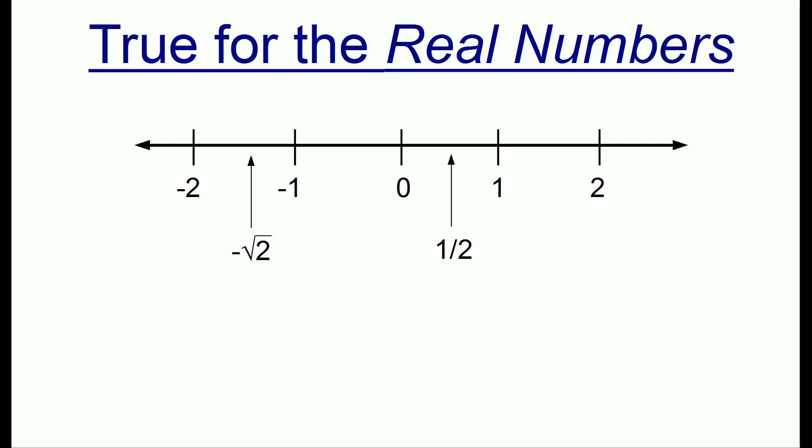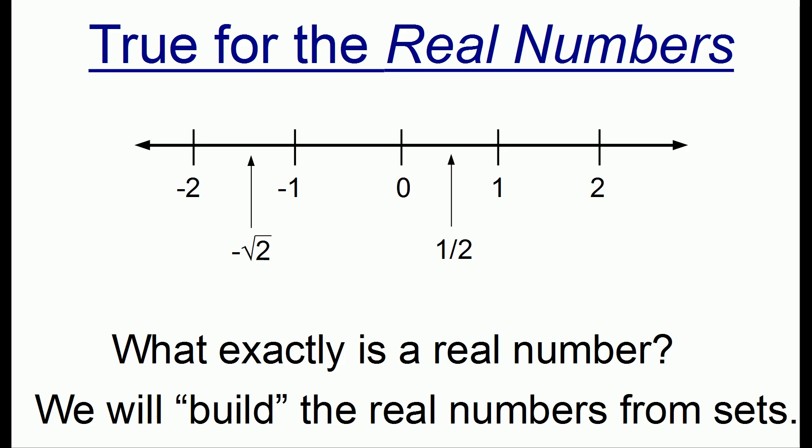But to explain how 0.9 repeating is not equal to 1, we're going to have to go into the details of what exactly a real number is and how we can build up the real numbers from a set theoretic construction.